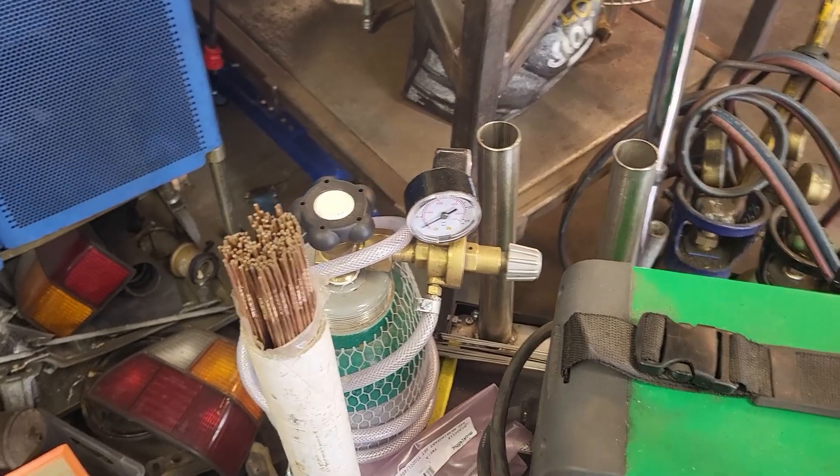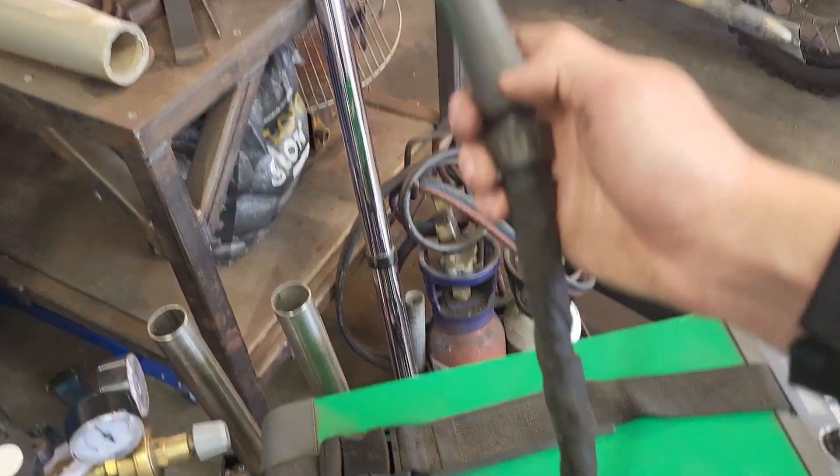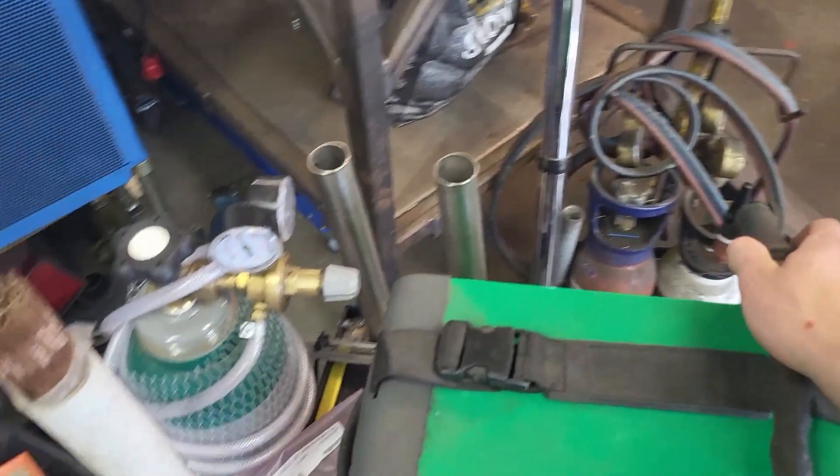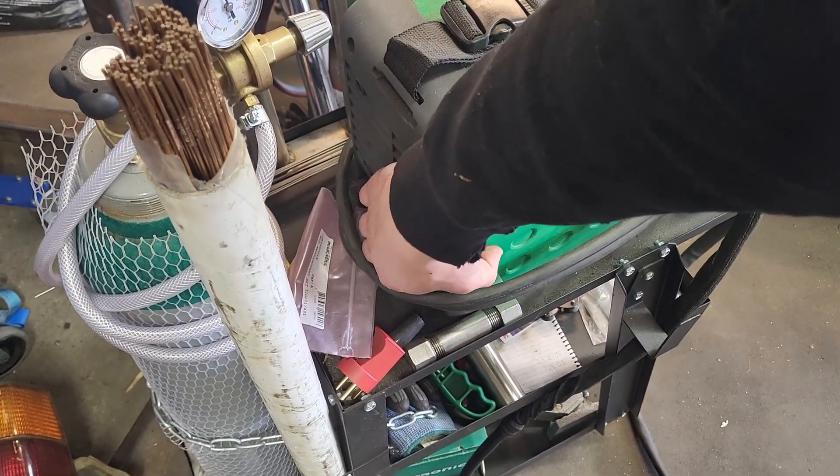The first thing I usually do is turning on the gas. This ensures that all of the lines in the welding hose are filled with gas. And then it depends on what machine you have, but my start button is here on the back.